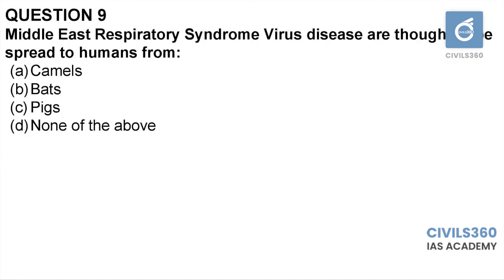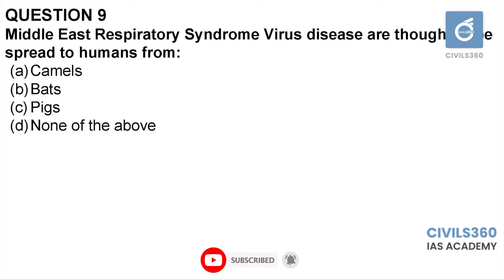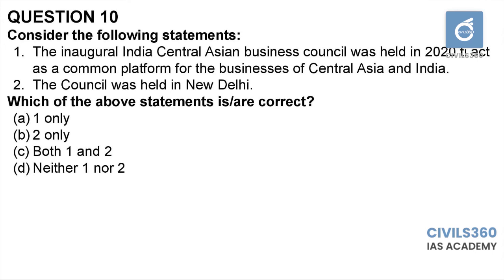Question number nine: Middle East Respiratory Syndrome virus disease is thought to be spread to humans from — A: camels, B: bats, C: pigs, D: none of the above. Middle East Respiratory Syndrome is a coronavirus that was first identified in Saudi Arabia in 2012, and it was spread from camels to human beings. Therefore the answer is option A: camels.